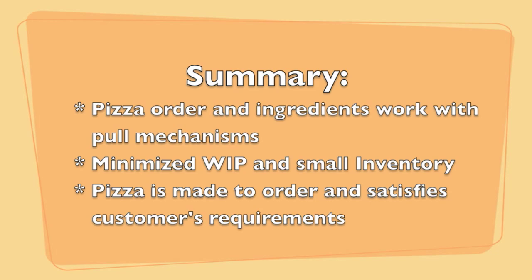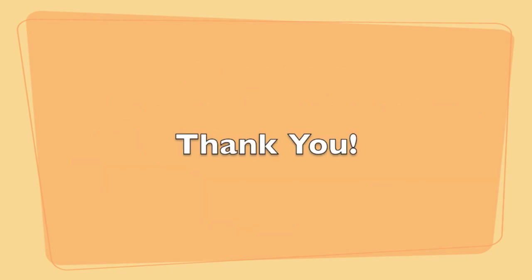Now let's summarize what we just learned in Kanban Pizza. We used the pizza order as a pull signal. The ingredients in the counter and in the fridge were also refilled using a pull signal mechanism. The inventory of ingredients is kept as small as possible, ensuring fresh ingredients in our pizzas all the time. By keeping work in progress at a minimum, we ensure that the ingredients don't stay in the counter for a long time and go bad. I hope you learned something today, and thank you for stopping at Kanban Pizza.